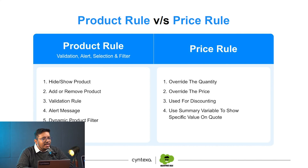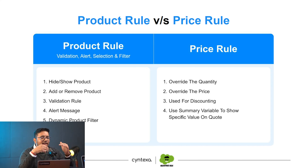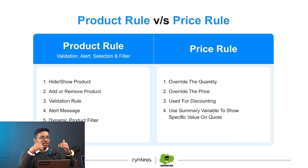Then we have dynamic product filters. When we are choosing products, it filters the other products that can go along with the selected item.